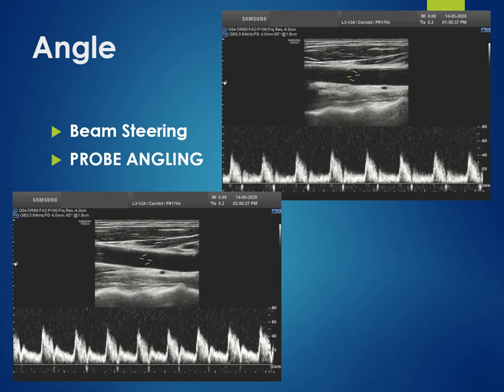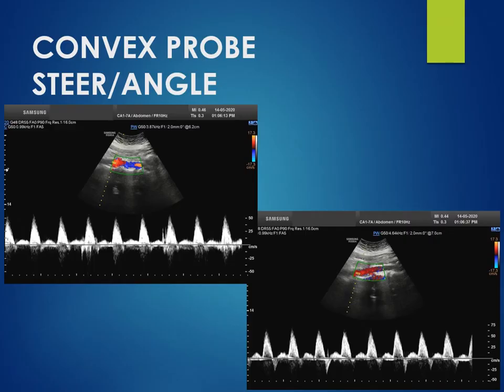Whenever the artery is parallel to the probe, we can steer the colour box or the spectrum towards either side. But sometimes this is not enough and we need to angulate the probe a little bit so that the angle of insonation becomes 60 degrees. This is better seen in the image below. In a convex probe, steering is not possible, so angling the probe is useful here to get a proper spectrum, as seen in this example.